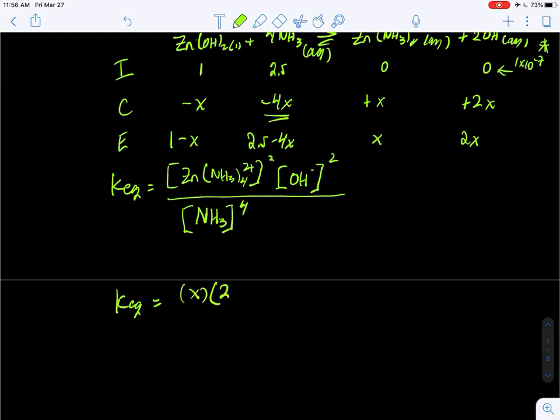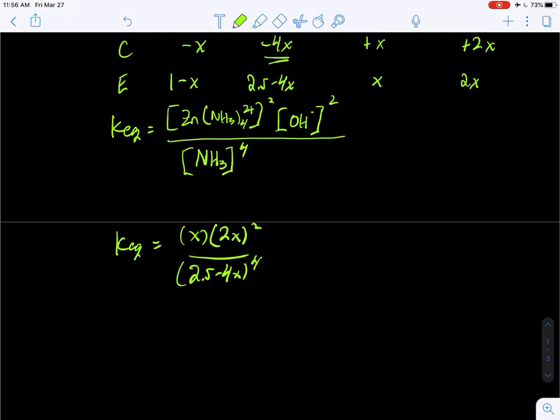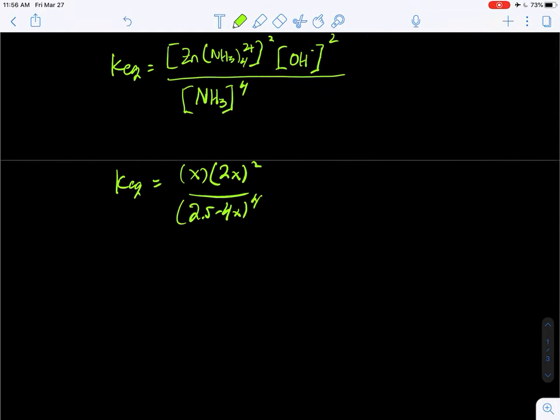We go ahead and substitute in our values: x times 4x times 2x squared over (2.5-4x) to the fourth power. We want to make an assumption here - because the equilibrium constant is much less than 1 (10^-8), we're going to assume that x is very small and therefore 2.5-4x is about equal to 2.5.